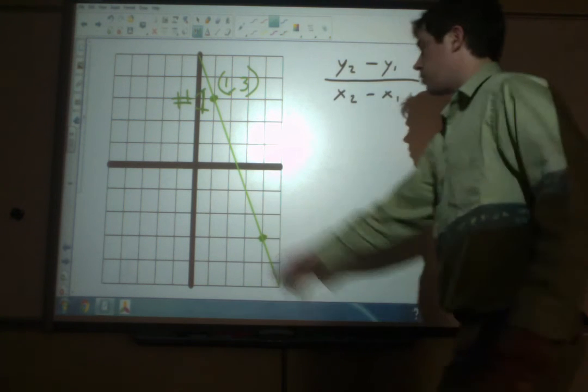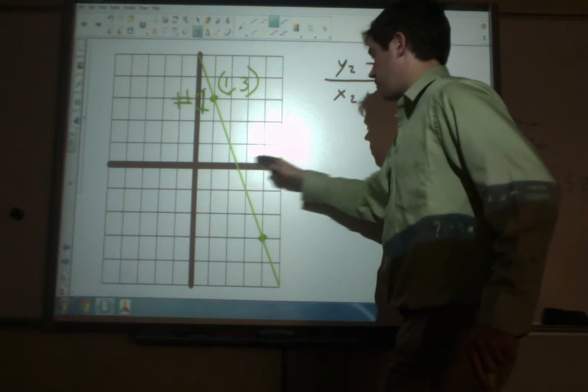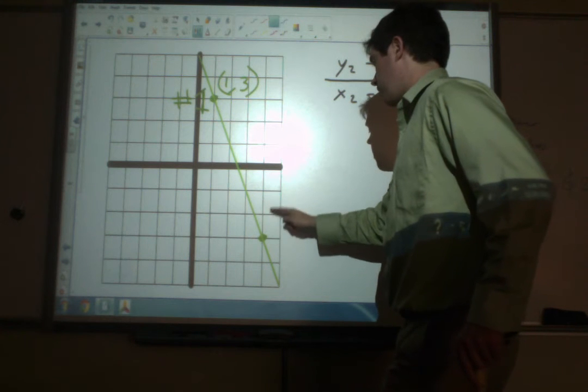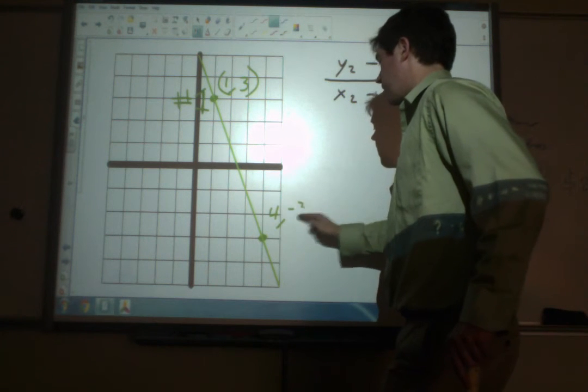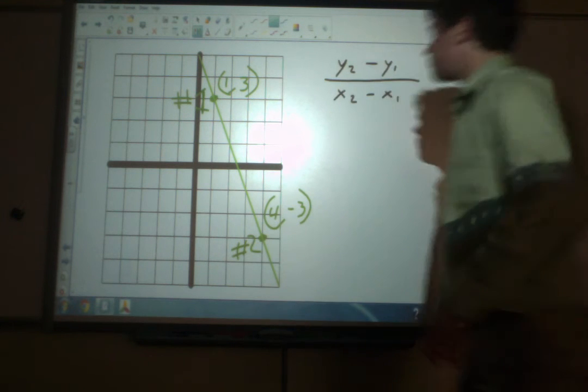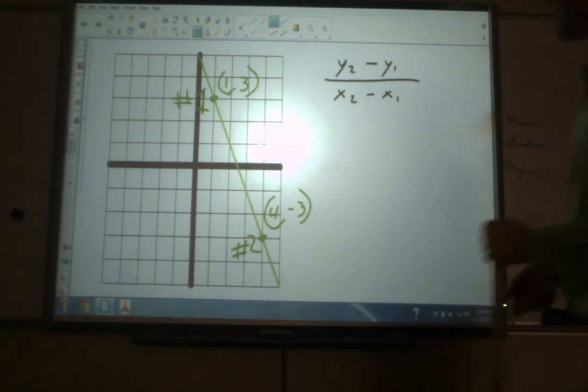And here's the other point. It's 1, 2, 3, 4. Negative 1, negative 2, negative 3. So 4, comma, negative 3. And we'll call this point number 2. Now we've just got to fill in the numbers.